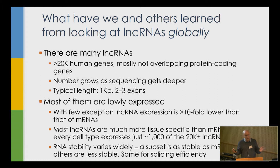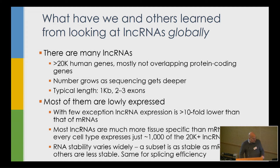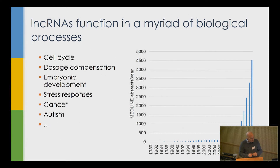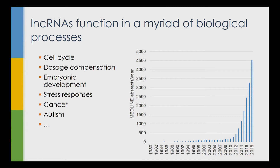Their stability varies quite widely. There is a subset of about 1,000 which are relatively stable — as stable as a typical mRNA — and then a long tail of RNAs that become very unstable and much less highly expressed. Splicing efficiency is similar: some are as efficiently spliced as mRNAs, many not so much. There has been increasing interest in these RNAs, and they have been implicated in a variety of different pathways and biological processes with varying degrees of evidence.